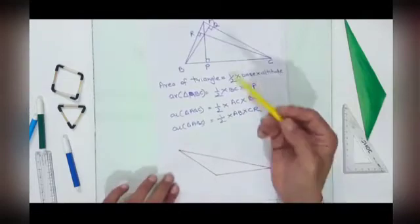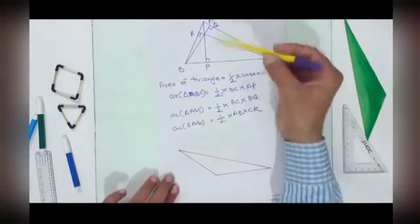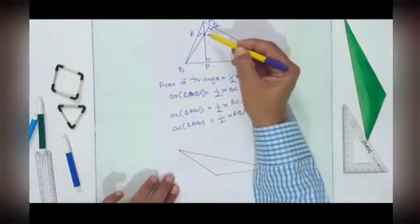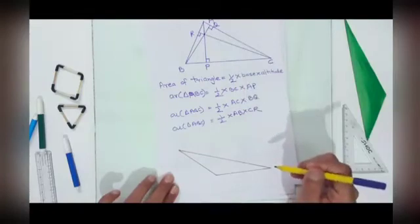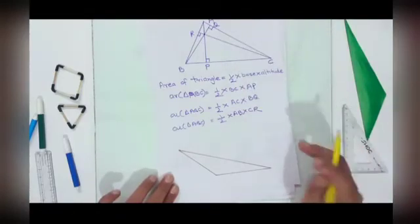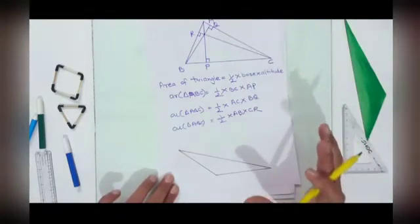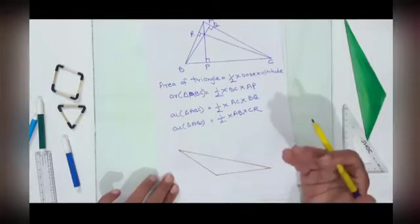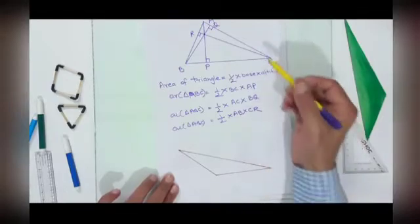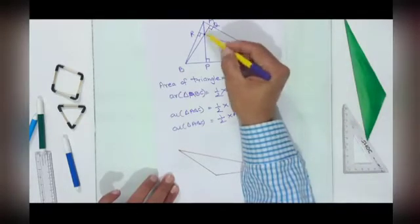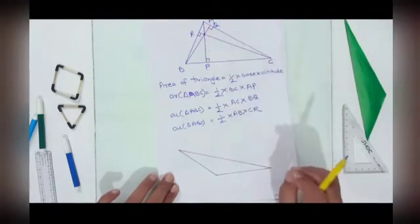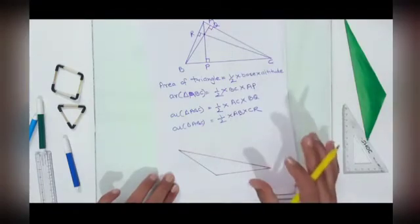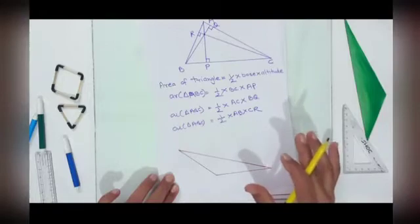We can observe that the point of concurrence of these three altitudes is called the orthocenter. 'Ortho' means perpendicular. So the point where all three perpendiculars of a triangle meet is called the orthocenter of the triangle.